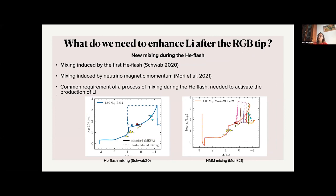And there are two new models that can be able to explain this effect. I don't have time to go into detail, but the paper, you can see them in the paper, Schwab and Mori. And so another mixing effort during the helium flash is necessary to explain the abundance of lithium in the clusters. So both models have a common requirement of a process of mixing during the helium flash and can reproduce these abundances, both in Gaia-ESO and in GALAH for the red clump stars.